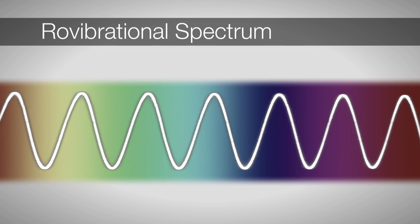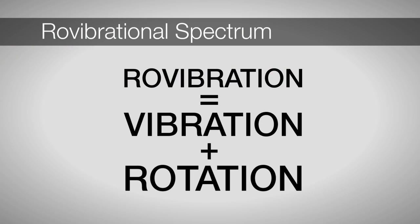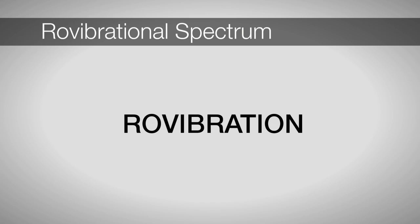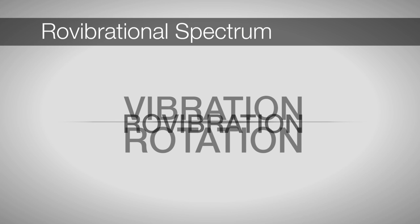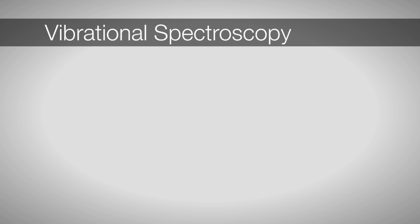The rovibrational spectrum of a molecule contains information about the vibrational and rotational levels of the molecule. Even though both rotations and vibrations will be observed simultaneously, we can simplify our analysis by first treating these motions independently. Let's start with some basics for vibrational spectroscopy.